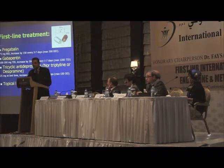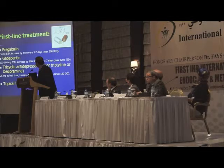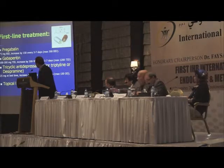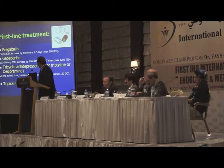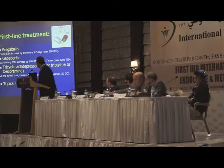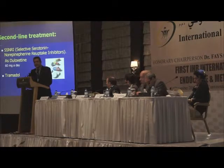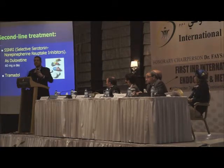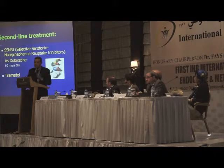Both pregabalin and gabapentin are basically anticonvulsant medications with an ancillary analgesic effect, and I always emphasize both as first-line in neuropathic pain. Tricyclic antidepressants are also well known. Sometimes we have to use topical lidocaine or gel to soothe the area of severe pain. The second line of treatment includes selective serotonin-norepinephrine reuptake inhibitors, then tramadol. Regarding non-steroidal anti-inflammatory drugs, you can use them, but the point is to go first to the first-line treatment and then try other medications.